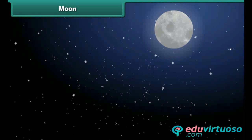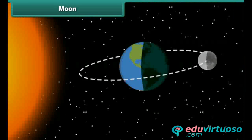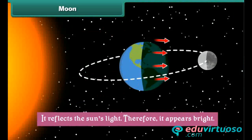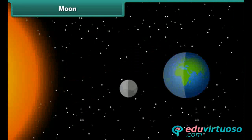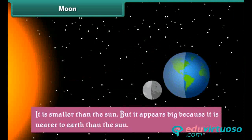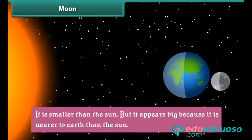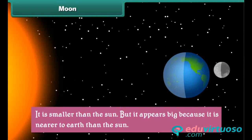The moon does not have light of its own. It reflects the sun's light, and therefore it appears bright. It is smaller than the sun, but it appears big because it is nearer to the earth than the sun.